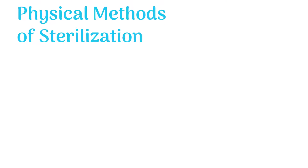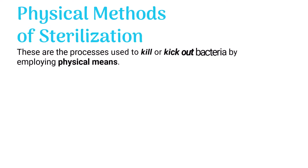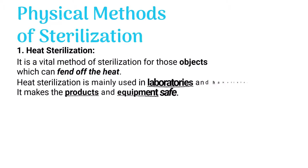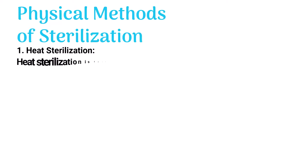Physical methods of sterilization are processes used to kill or remove bacteria by employing physical means. These methods mainly use heat, pressure, and radiation. Heat sterilization is a vital method for objects which can withstand heat, and is mainly used in laboratories and hospitals to make products and equipment safe.